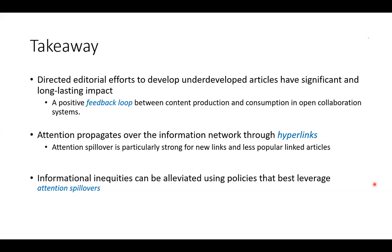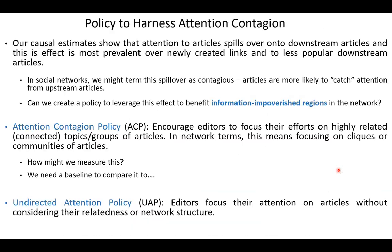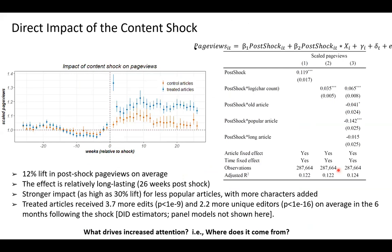From Neil in the audience: why did the control articles also see increased page views after the shock? Probably because of seasonality — during a school semester, a lot of Wikipedia articles have higher viewership overall. That's exactly why we need a control group: fluctuation on Wikipedia is difficult to control, so it's better to compare treated with control.